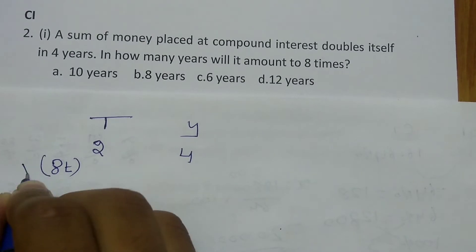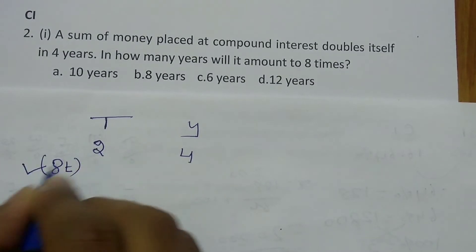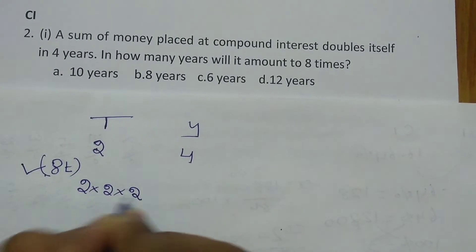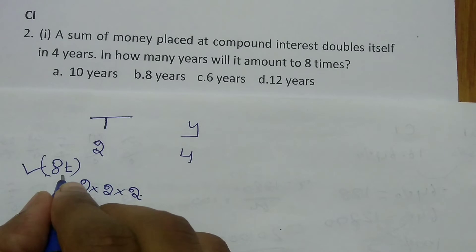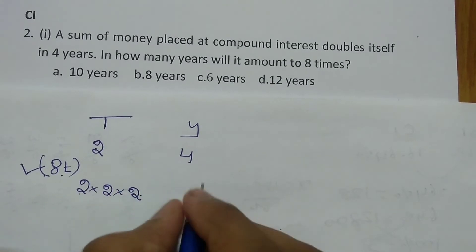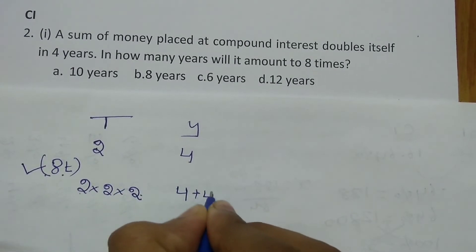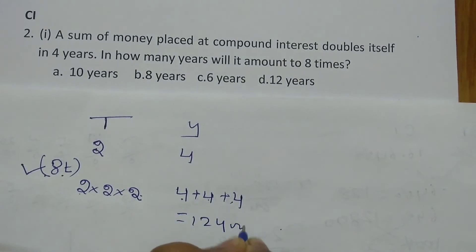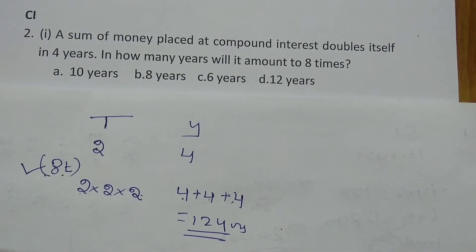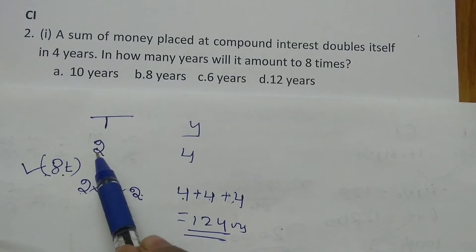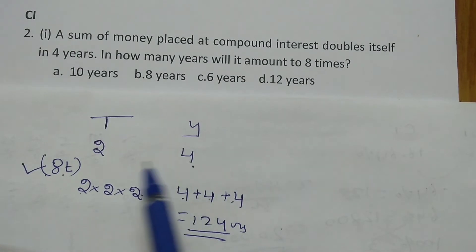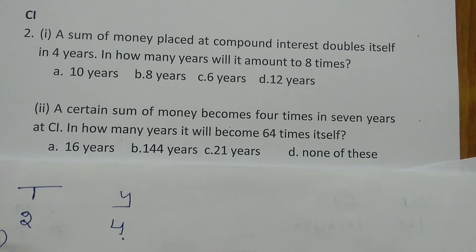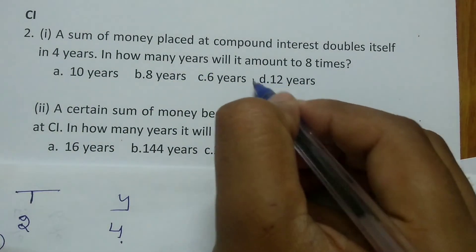You have to represent 8 in terms of 2: 2 × 2 × 2 = 8. On the right-hand side, write the corresponding years: 4 + 4 + 4 = 12. So in 12 years the amount will become 8 times. The answer for the first compound interest question is 12 years.